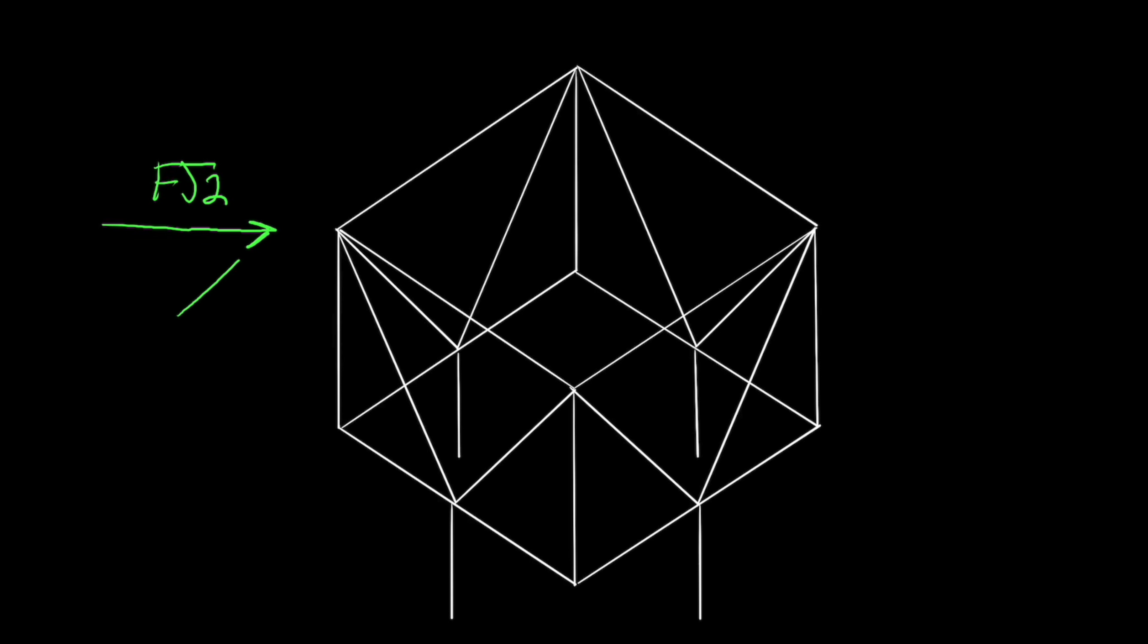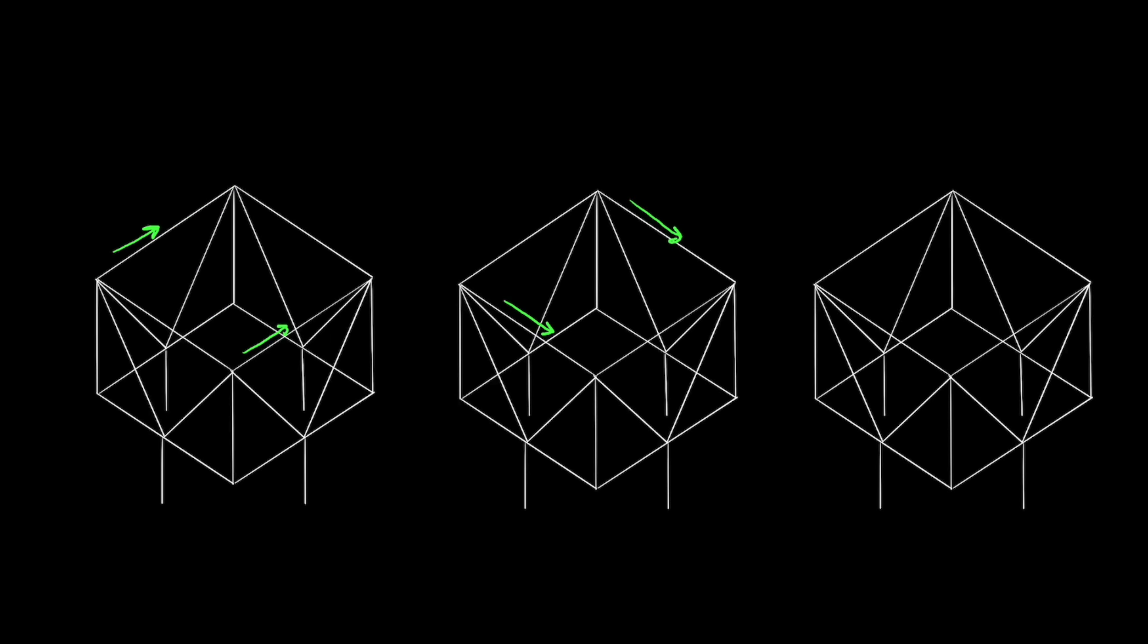So seeing this, LeMessurier redid his calculations for the braces, and we're going to do that right now. So I'm going to take this total wind force and divide it into two components, one that acts along each perpendicular face of the building. The resulting loads on each face are equivalent to the individual perpendicular wind load cases from the building code, but this time instead of analyzing them separately, we have to analyze them together. So we're going to superimpose the resulting forces on top of each other.